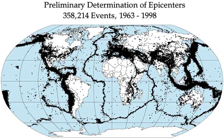Soil liquefaction occurs when, because of the shaking, water-saturated granular material temporarily loses its strength and transforms from a solid to a liquid. Soil liquefaction may cause rigid structures like buildings and bridges to tilt or sink into the liquefied deposits. For example, in the 1964 Alaska earthquake, soil liquefaction caused many buildings to sink into the ground, eventually collapsing upon themselves.